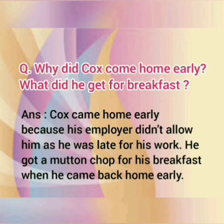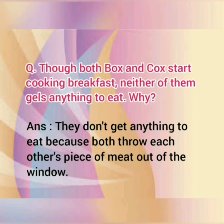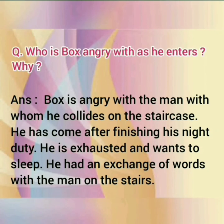Though both Box and Cox start cooking breakfast, neither of them gets anything to eat. Why? They don't get anything to eat because both throw each other's piece of meat out of the window. Who is Box angry with as he enters, and why? Box is angry with the man whom he encountered on the staircase. He has come after finishing his night duty, is exhausted and wants to sleep, and he had an exchange of words with the man on the stairs.